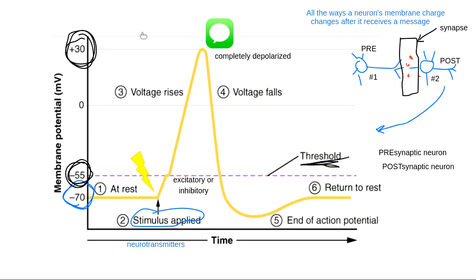One last number we need to know on this graph — it's not printed there so you'll have to add it yourself — is negative 75 millivolts. Down here at the very bottom where the neuron has gone extra negative, this stage is called hyperpolarized. When my neuron is all the way down at negative 75 millivolts, that neuron is hyperpolarized — meaning it's too negative. My neuron is so good at going back to being negative that it gets a little too negative. Over time, I'll go from hyperpolarized back up to my normal resting membrane potential.